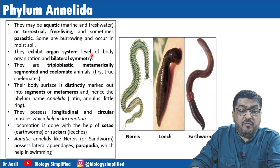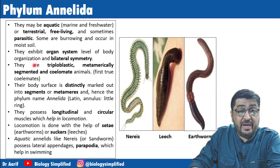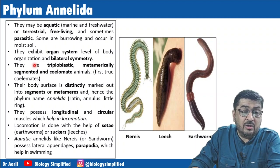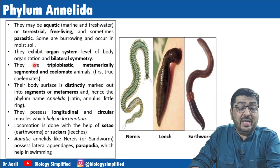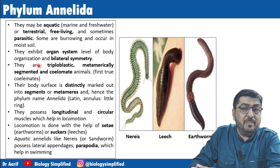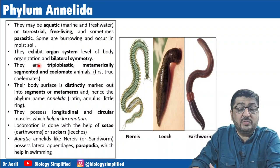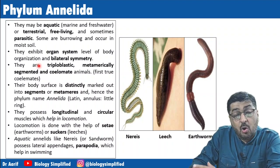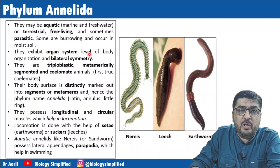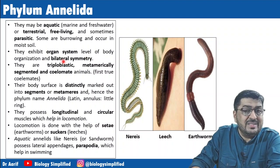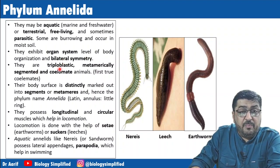Annelids exhibit organ-level of body organization — that is our first criteria of classification. Now in the last video when we did Aschelminthes, organ system organization started. Till Platyhelminthes it was organ level. From Aschelminthes, the digestive system was complete with mouth and anus. So here also we have organ system level of body organization, bilateral symmetry, and they are triploblastic, metamerically segmented, and coelomate animals.